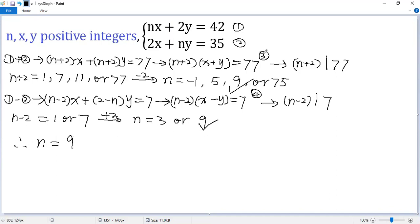Now from 3, n plus 2, which is 11 times x plus y equals 77. So both sides divided by 11. So we get x plus y equals 7.